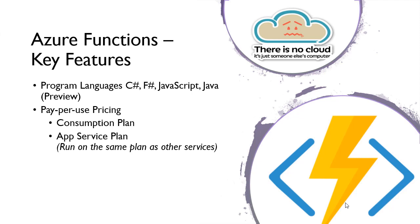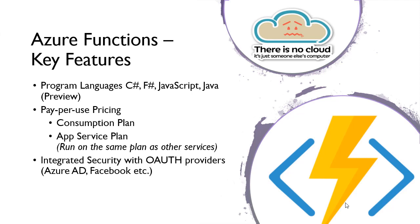With an app service plan, you can put web apps and other apps on the same compute infrastructure that you already have a plan for, and you can combine your Azure Functions there. So instead of going pay-per-use on the consumption plan, you can just use them as part of your app service plan itself. Azure Functions also has integrated security with major OAuth providers like Azure AD and Facebook, and you can code in the portal or deploy via your standard DevOps tools.